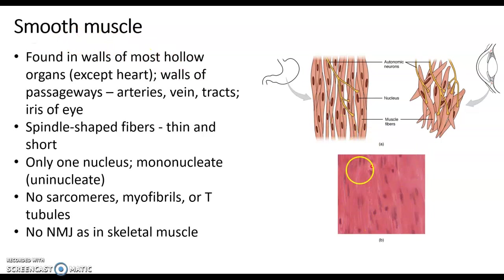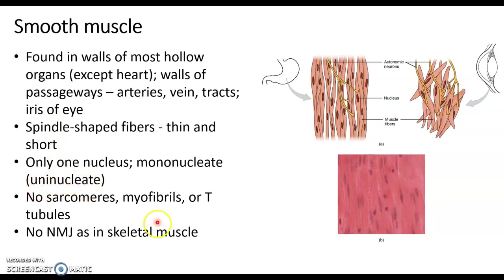Smooth muscle is found in the walls of our viscera or hollow organs. It's also found in our blood vessels, in our tracts like the respiratory tract and digestive tract, and the iris — the colored part of our eye — is also smooth muscle. Smooth muscle only has one nucleus; it's uninucleate. Smooth muscles do not have sarcomeres — those are units of contraction in skeletal muscle. There are no myofibrils, no T-tubules, and they don't have the same neuromuscular junctions as skeletal muscles.